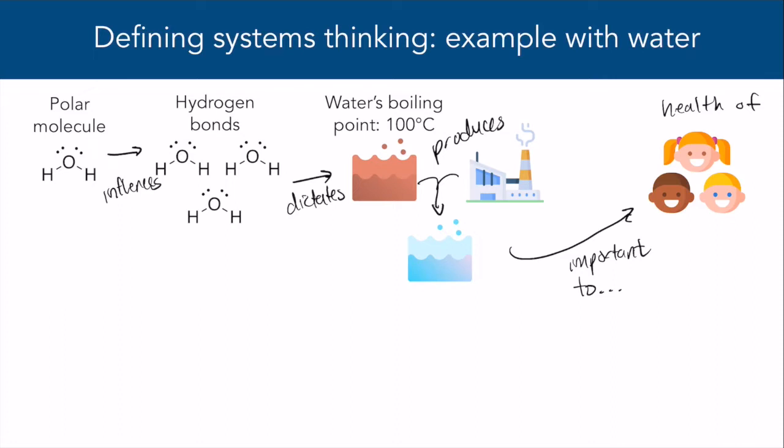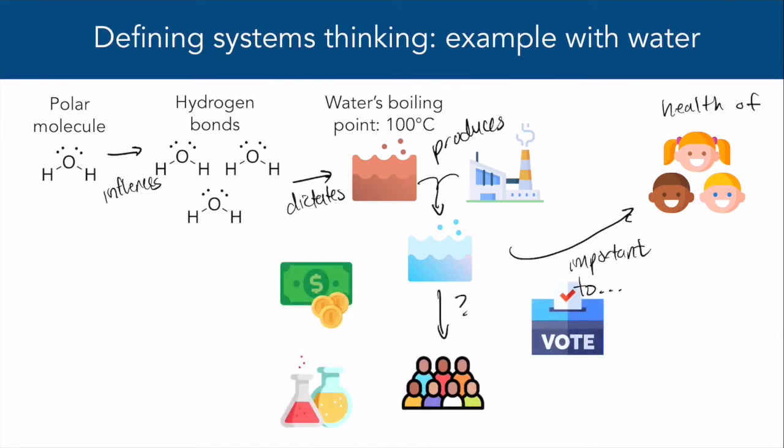For example, what if you wanted to determine ways to ensure that everyone in your community received clean drinking water? What would need to happen economically, politically, scientifically, and socially for that to happen?